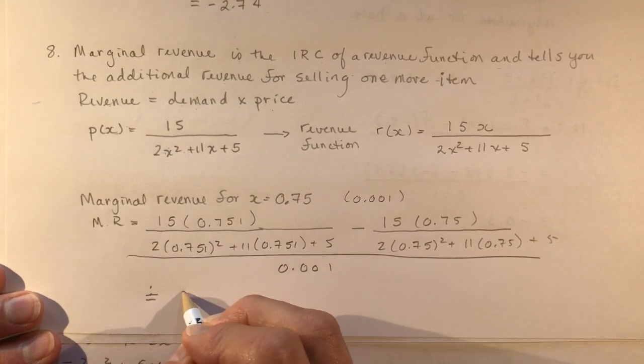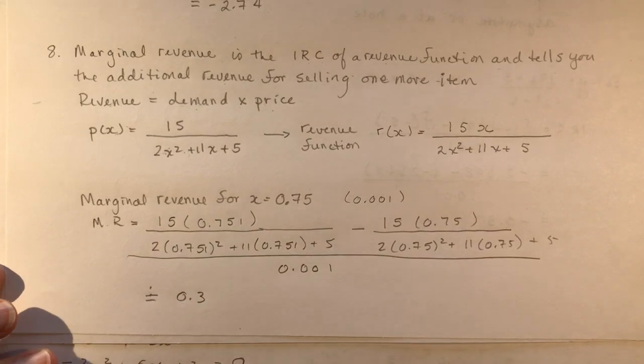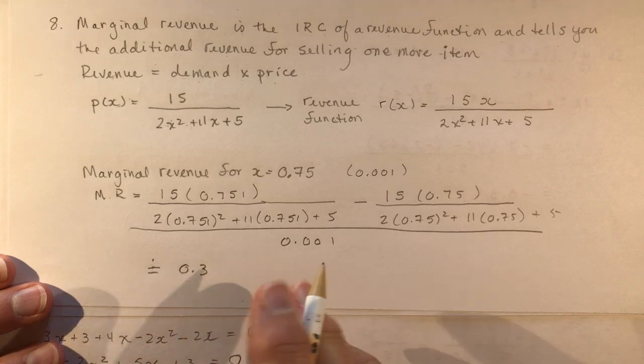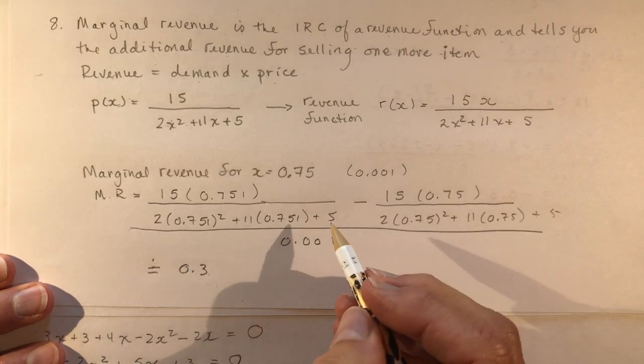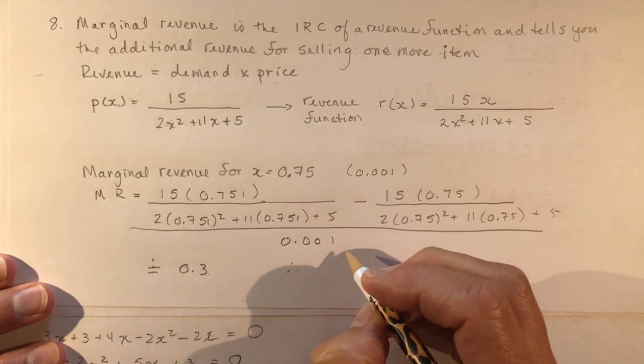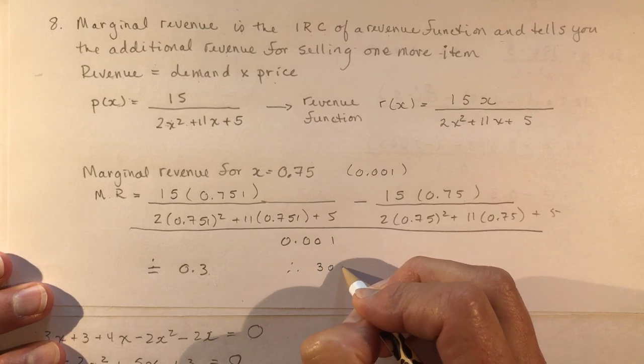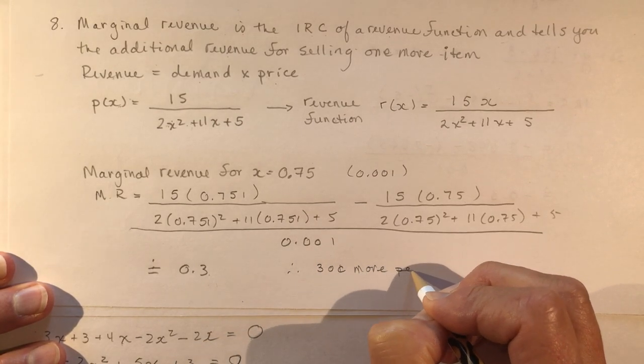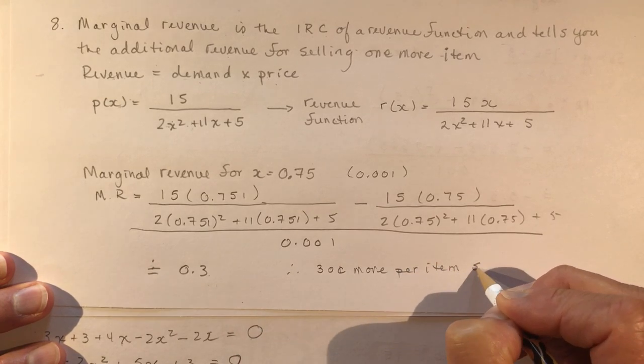And that comes out to about 0.3. So it's costing you 30 cents more, or you're making 30 cents more for every item sold.